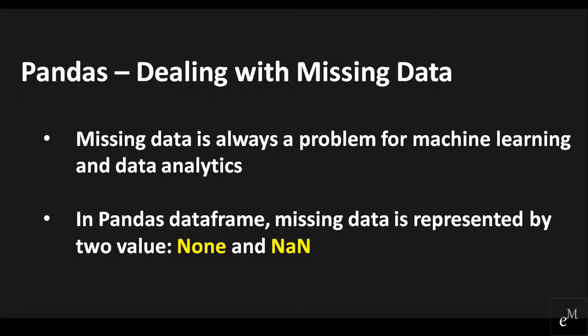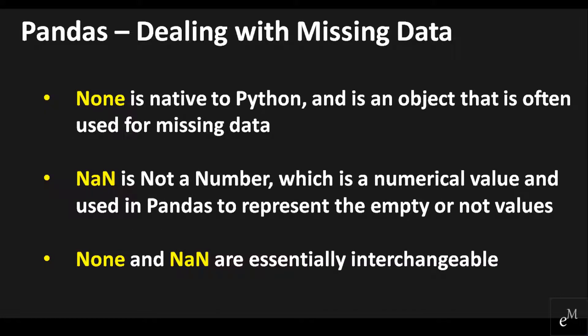Sometimes many databases simply arrive with missing data, either because it exists and was not collected, or it never existed. None is native to Python and is an object that is often used for missing data. While NaN, which stands for Not a Number, is a numerical value used in Pandas to represent empty or null values. Pandas treats None and NaN as essentially interchangeable for indicating missing or null values. There are several useful functions for detecting, removing, and replacing null values in a Pandas DataFrame.